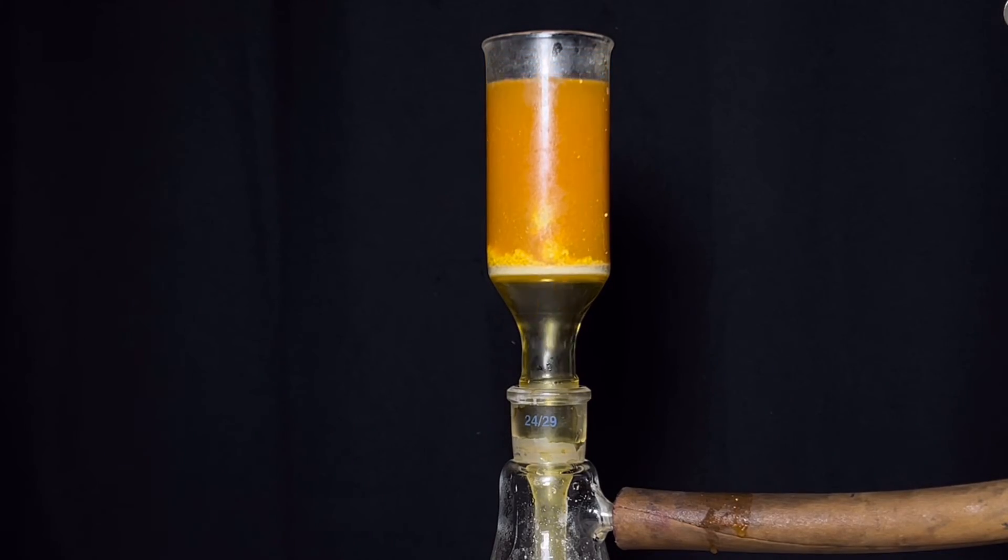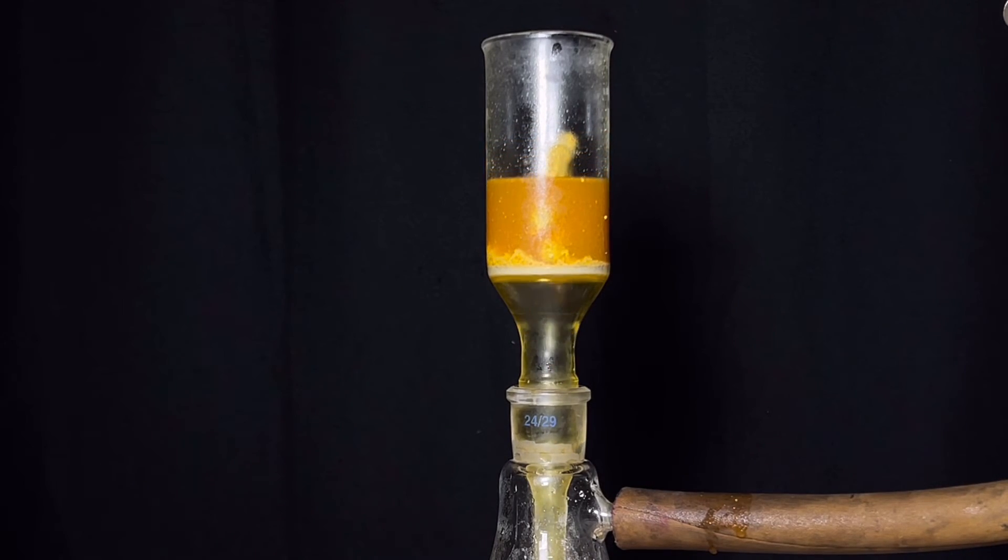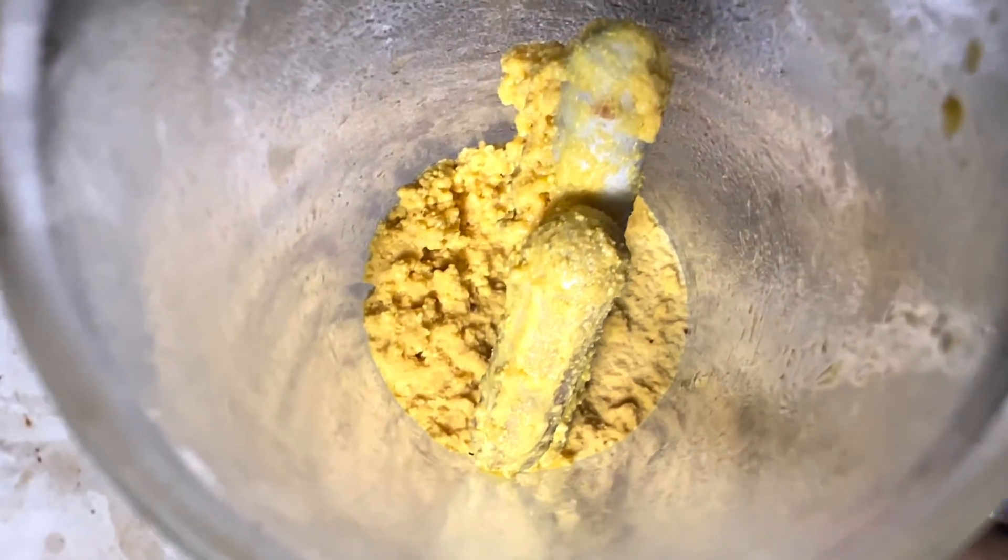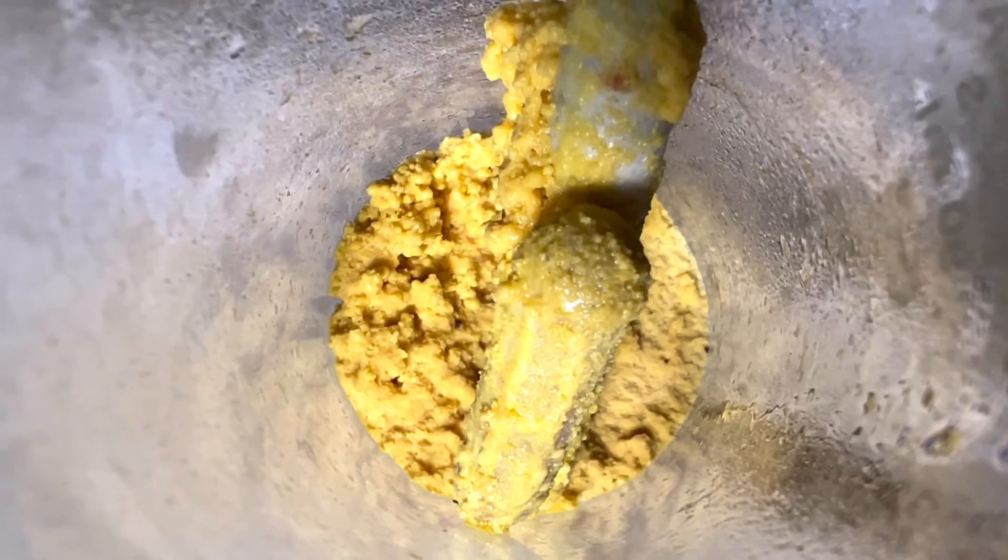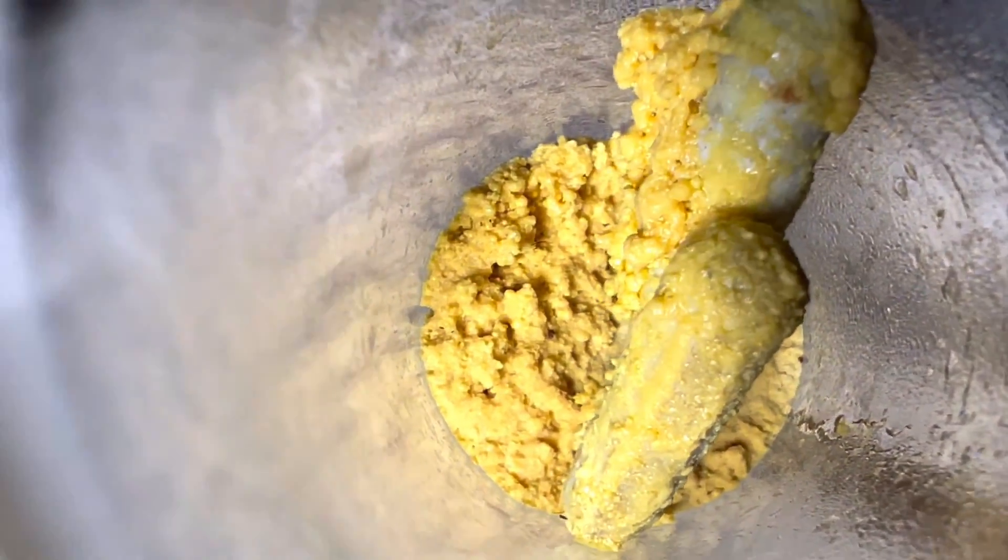This was then collected by vacuum filtration using a Buchner funnel. This is the crude product after filtration - it appears yellow. You can see two stirring bars which accidentally fell into the funnel.